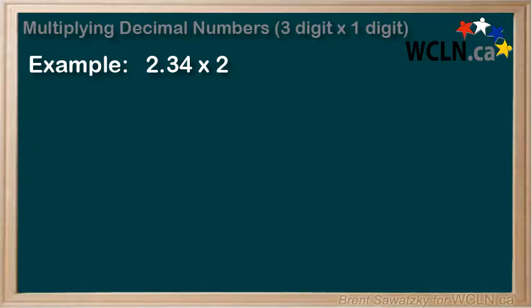2.34 times 2. Now we already know how to multiply multi-digit numbers, so the only new challenge here is knowing where the decimal ends up in the final answer.